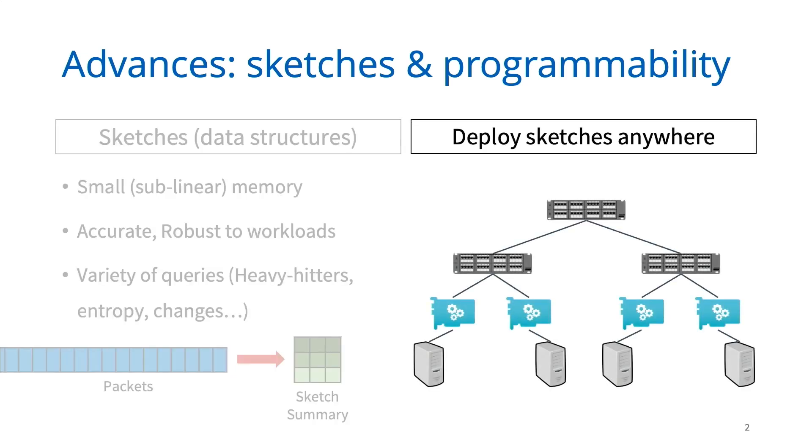On the programmable network side, rather than being limited by the types of primitives available on different devices, innovations have now allowed us to deploy many expressive sketch-based telemetry tasks at a variety of vantage points in the network, including programmable switches, smart NICs, and software switches. Both of these threads have brought us closer to rich, robust, and efficient network-wide monitoring.